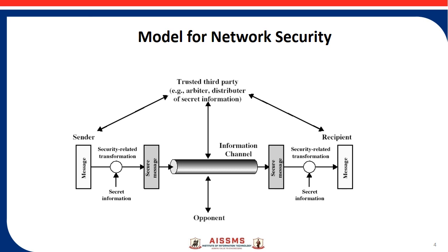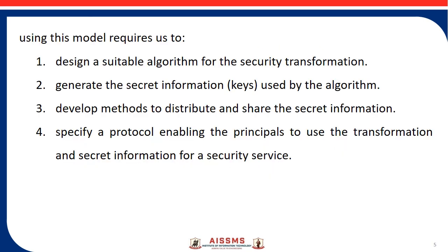A trusted third party may be needed to achieve secure transmission. For example, a third party may be responsible for distributing the secret information to the principals while keeping it from any opponent, or a third party may be needed to arbitrate disputes concerning the authenticity of a message transmission. This model shows four basic tasks in designing a security service: design an algorithm for the security-related transformation, generate secret information or keys used by the algorithm, develop methods to distribute and share the secret information, and specify a protocol enabling the principals to use the transformation and secret information.